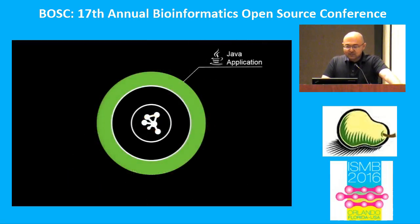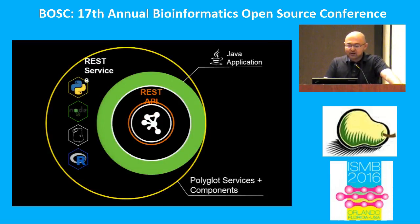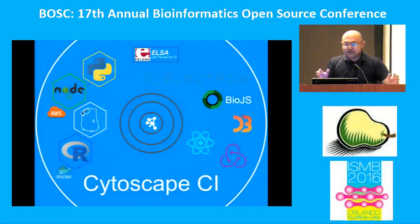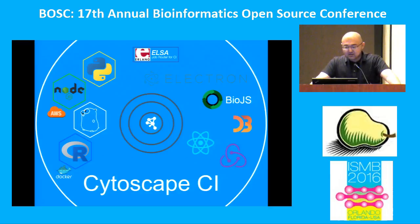We have the Java application, and we've built a RESTful API around the core to make it available for all kinds of programming languages. It's essentially a polyglot service — a collection of services where the visualization components are written in JavaScript. We call that loosely coupled ecosystem CyScape CI, or CyScape cyber infrastructure. It's a collection of RESTful web services plus one job router called ELSA Java, along with visualization components written in JavaScript.